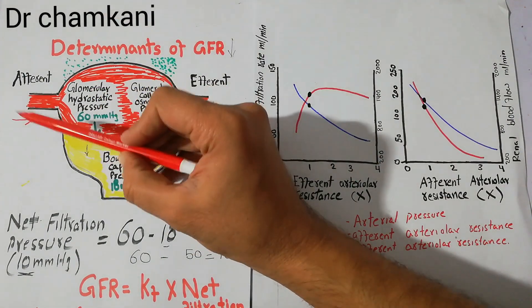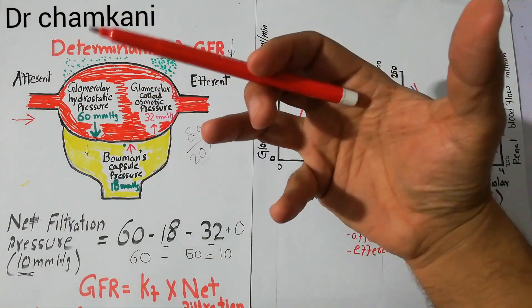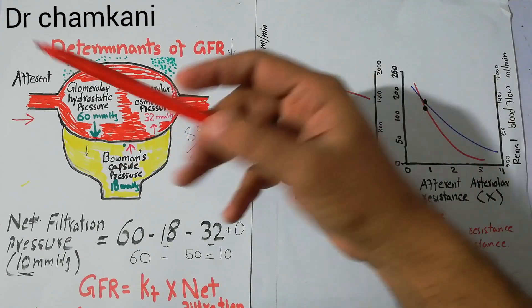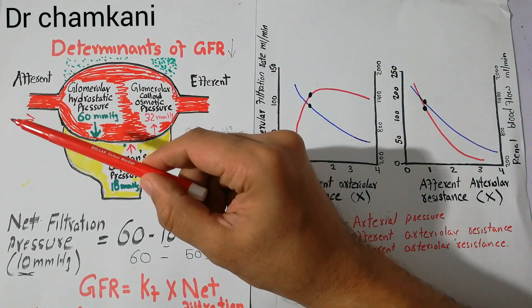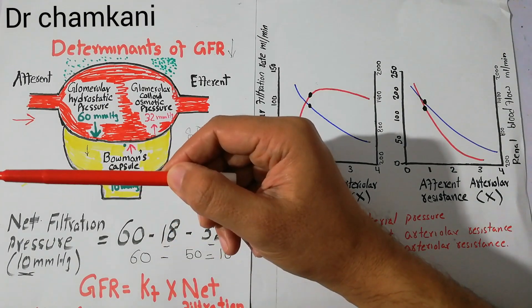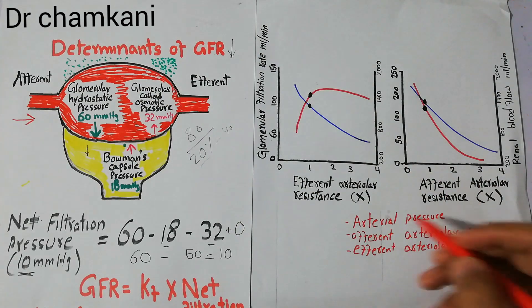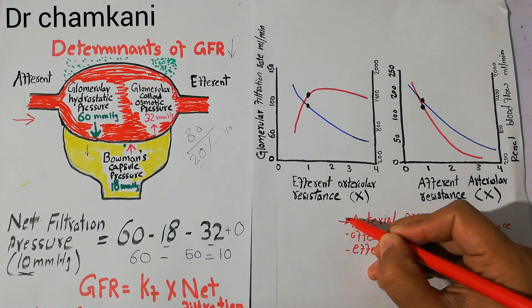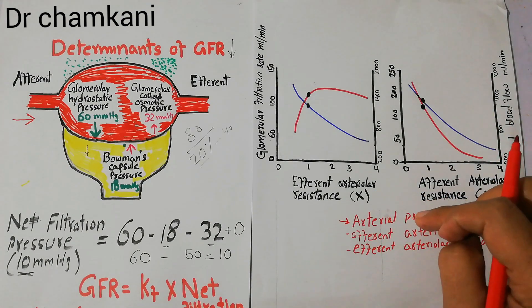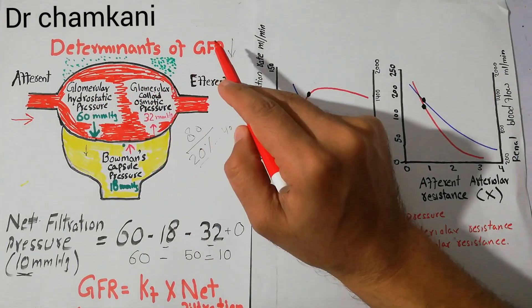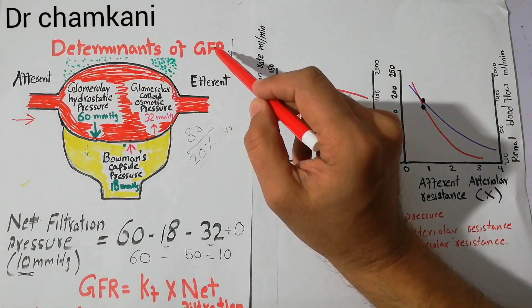When changes occur in arterial pressure, they are normally counteracted through feedback mechanisms. If the pressure increases, it is brought back to normal; if it decreases, feedback mechanisms try to restore it. So arterial pressure returns to normal very quickly. Simply put: increasing arterial pressure increases glomerular hydrostatic pressure and increases GFR, while decreasing arterial pressure decreases glomerular hydrostatic pressure and decreases GFR.